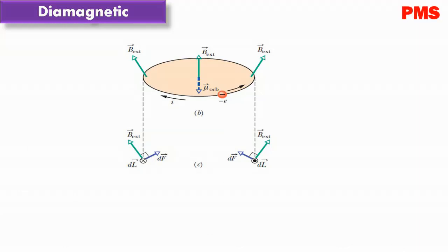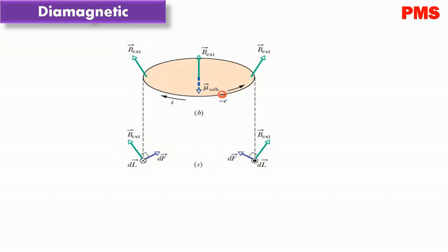The clockwise electron is decelerated by the clockwise electric field. Thus, the electron speed, the associated current i, and the upward magnetic dipole moment also decrease. By turning on the external magnetic field, we have given the atom a net magnetic dipole moment — directed downward.